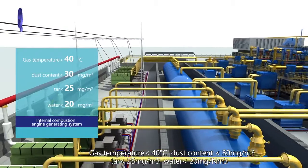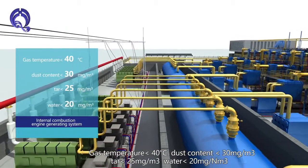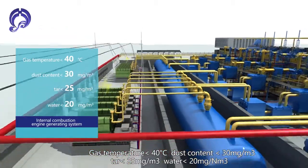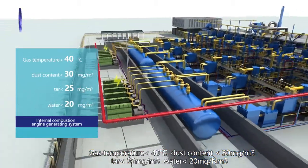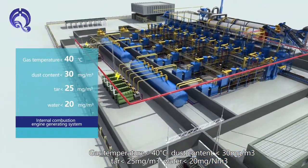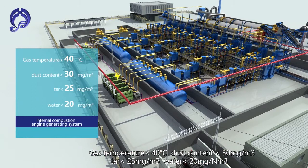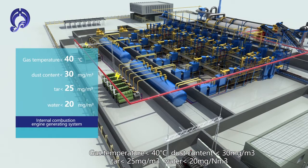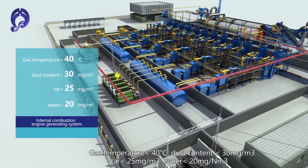Gas temperature: less than 40 degrees centigrade. Dust content: less than 30 mg per cubic meter. Tar: less than 25 mg per cubic meter. Water: less than 20 mg per normal cubic meter.